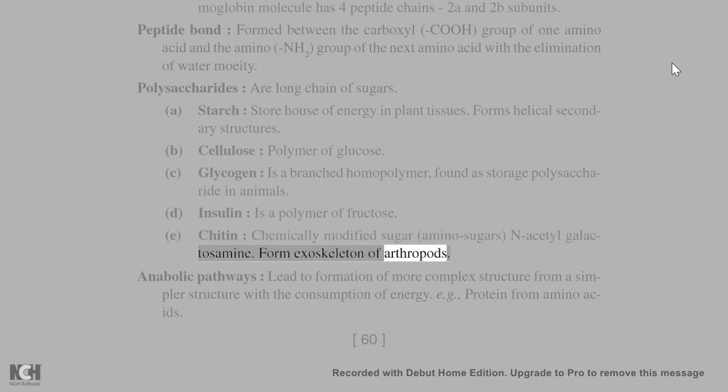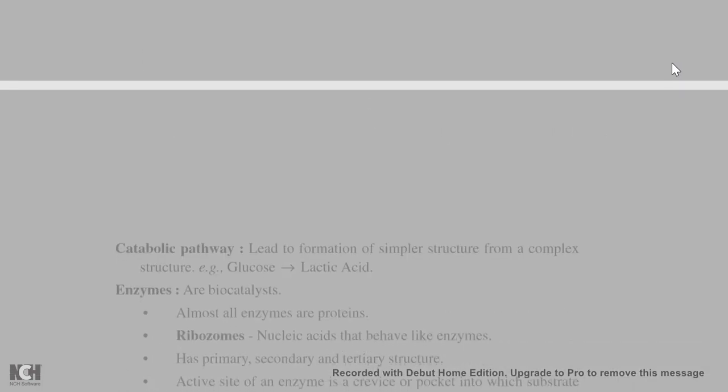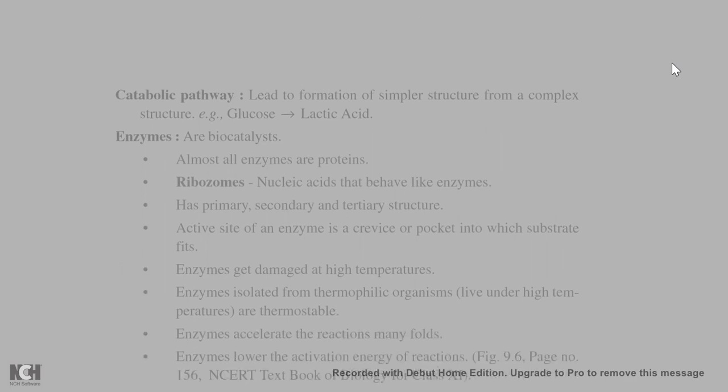Anabolic pathways lead to formation of more complex structure from a simpler structure with the consumption of energy, e.g., protein from amino acids. Catabolic pathway lead to formation of simpler structure from a complex structure, e.g., glucose to lactic acid.